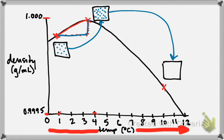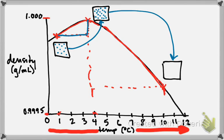Now for our third frame: as we go along this part of the curve, the temperature has gone from four degrees all the way up to ten degrees — a bigger temperature jump. That added energy to the molecules, and now we're looking at how their behavior has changed. What we see on the curve is that density is dropping as we get to that point. So in our particle picture, as I go from the second frame to the third, the particles should be getting more spread apart.